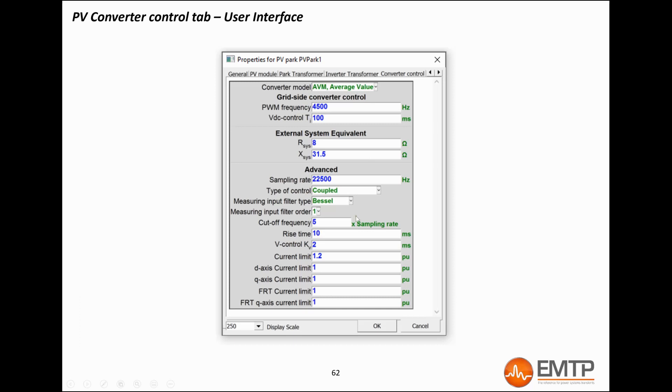The difference between AVM and detailed model of inverter will be explained in another video. The type of filter can be varied. It can have an influence on certain studies like subsynchronous control interaction, but are of minor importance for most studies, so you don't really have to worry about it.